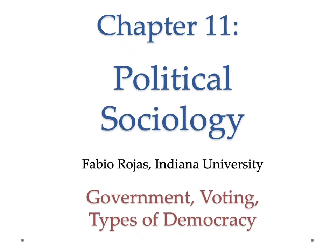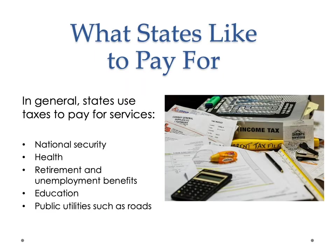Now that we have a sense of what states are and maybe where they came from — three different theories of where they came from — let's talk about what states pay for. In general, states use taxes to pay for services. These services include national security, health, retirement and unemployment benefits, education, and public utilities. National security should also include things like within-nation security, so policing and military.